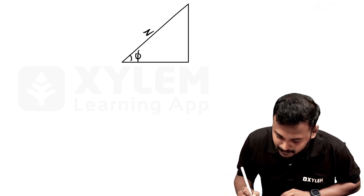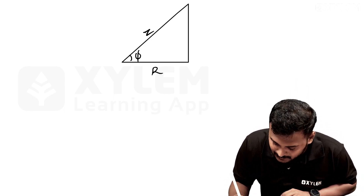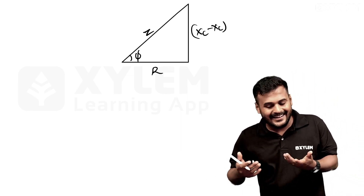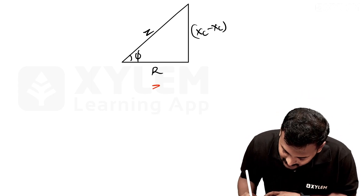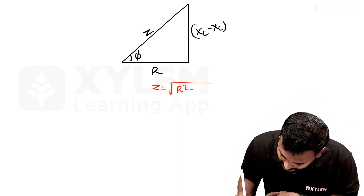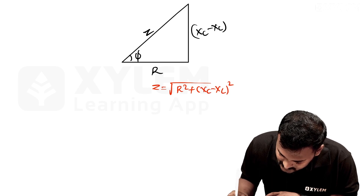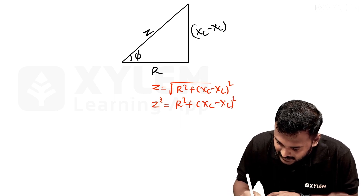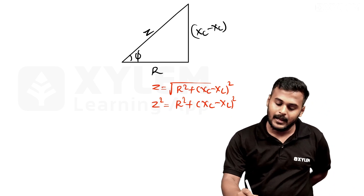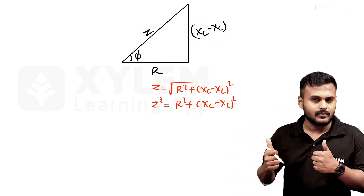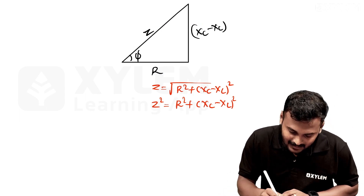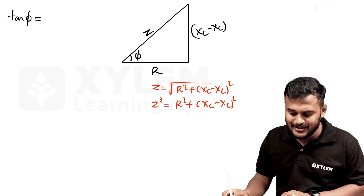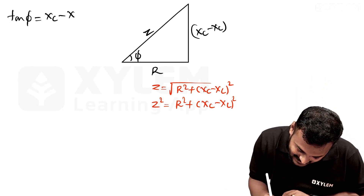This is impedance Z, base R, and altitude XC minus XL. Z squared equal to R squared plus XC minus XL whole squared — hypotenuse Z, base R, altitude XC minus XL. Now tan φ equals opposite side divided by adjacent, so tan φ equals XC minus XL divided by R.